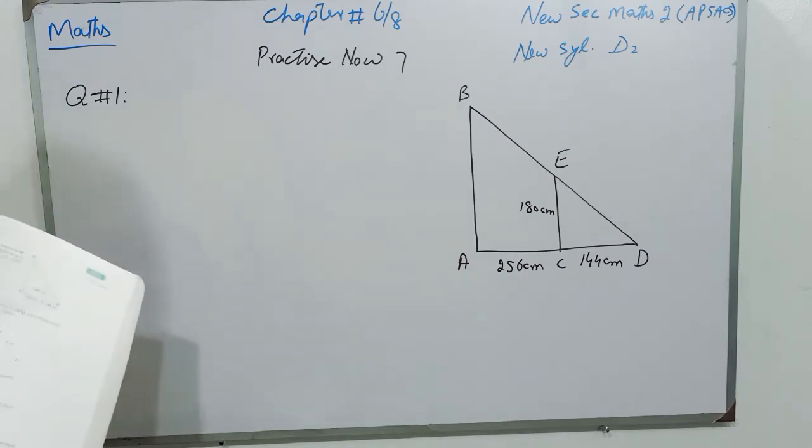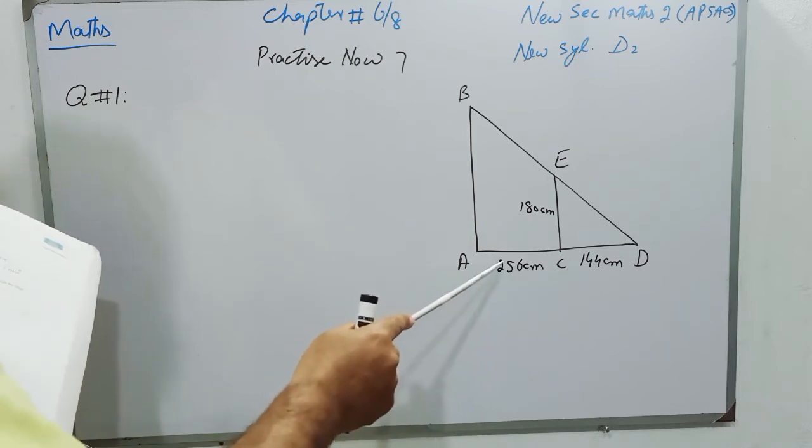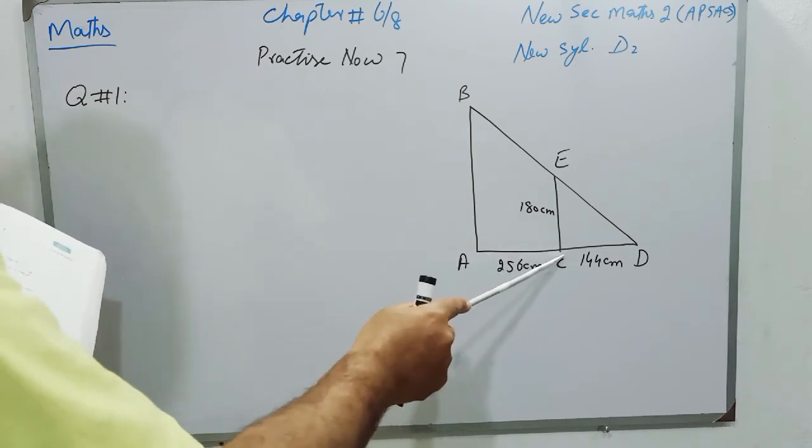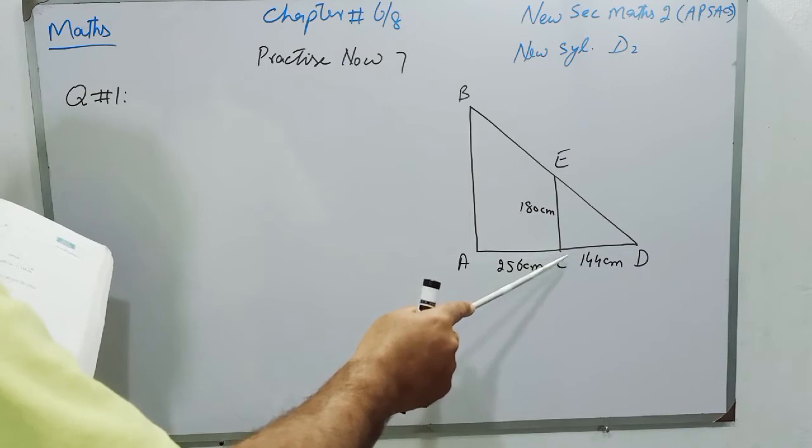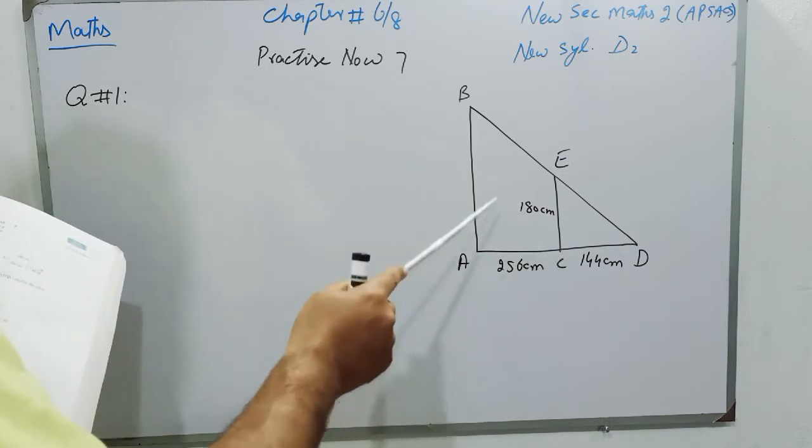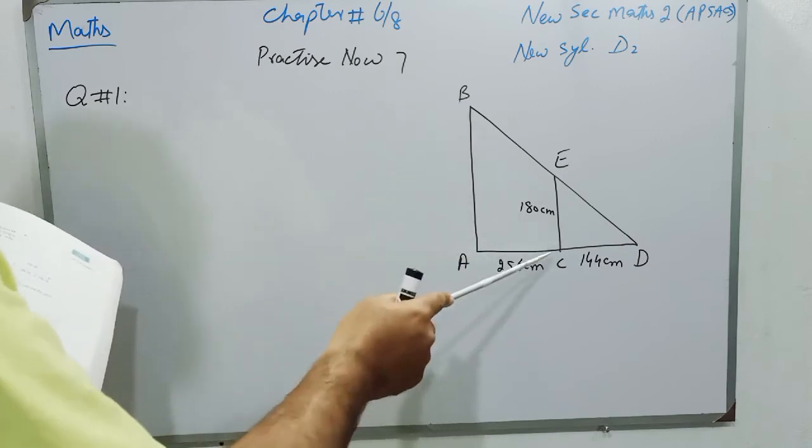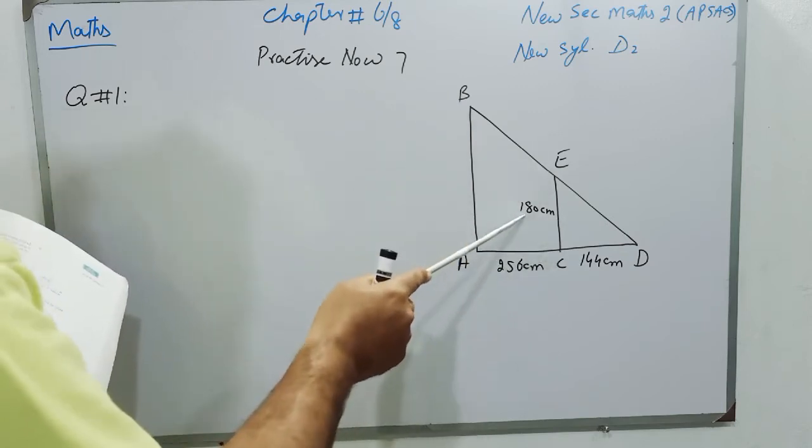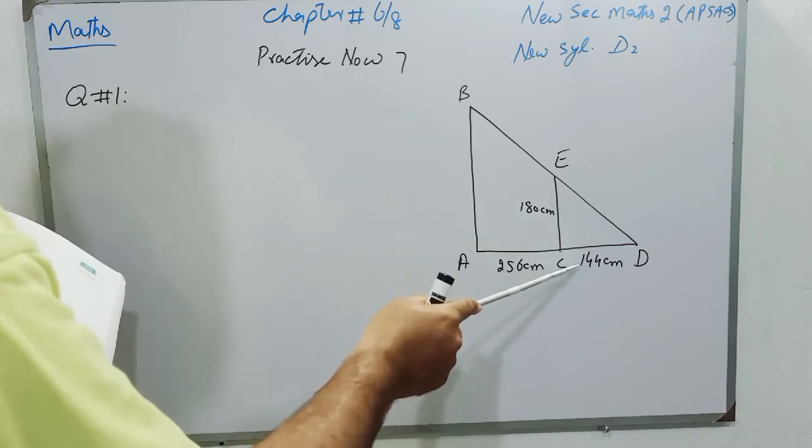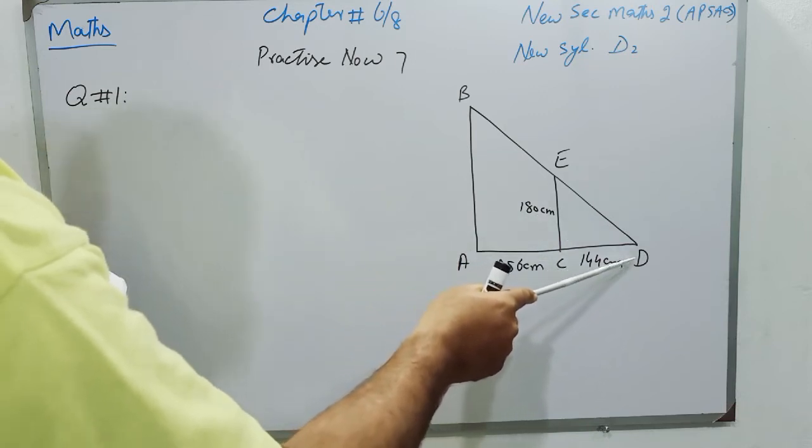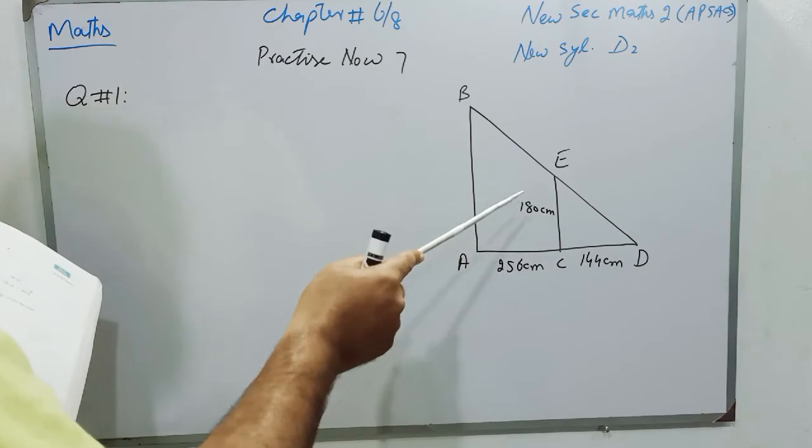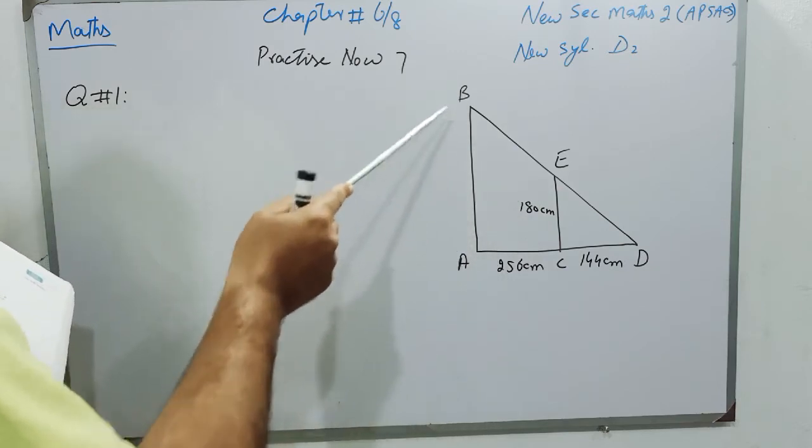Ethan stands 256 cm away from a lamp post AB at point C. He is 180 cm tall, and his shadow is 144 cm, and we have to find the height of AB.